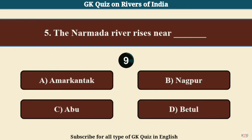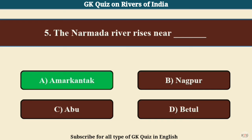Question No. 5. The Narmada River rises near? Answer A: Amarkantak.